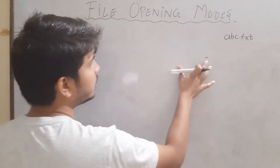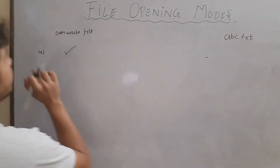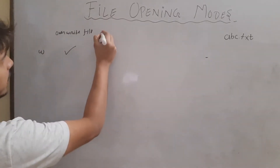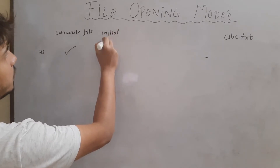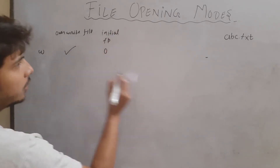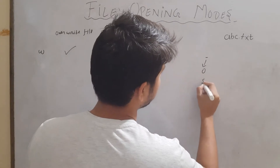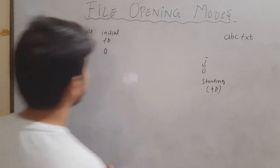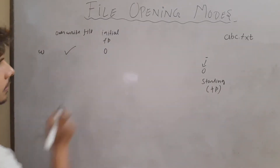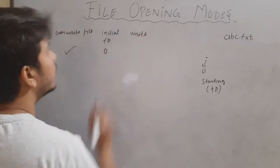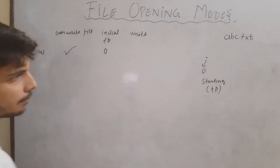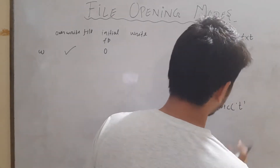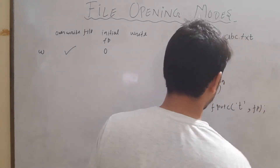The initial position of the file pointer when the file is opened in 'w' mode will be at the beginning of the file — the 0th location. Now, another thing: can we perform a write operation? Let's say I write fputc and give the character 't' with file pointer fp.